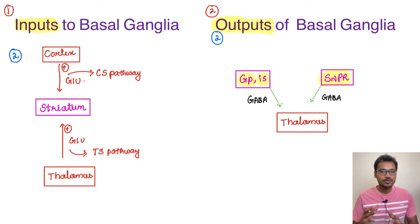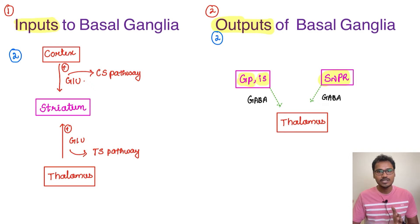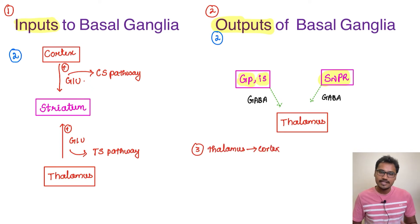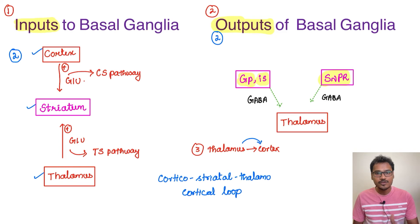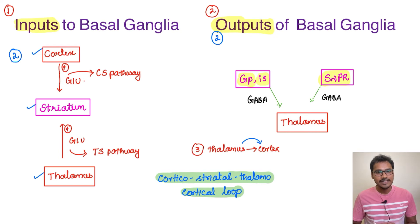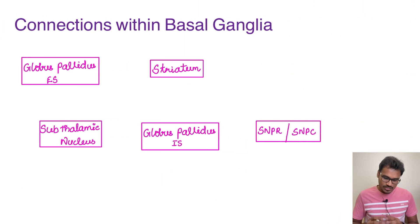One more group of neurons goes directly from the thalamus to the cortex. The entire loop — from cortex to striatum, through basal ganglia processing, output to thalamus, and back to cortex — is named the corticostriatal thalamocortical loop. Now let us discuss the internal connections of the basal ganglia.